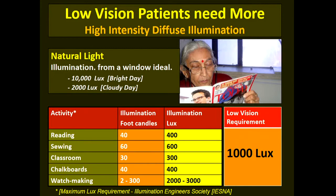For classrooms, one needs about 300 lux of illumination. But a low vision patient, to break through the mistiness of his vision, will require high-intensity diffuse illumination of about 1,000 lux. This can be provided by either natural light or artificial lighting. Sitting near a window provides about 10,000 lux on a bright day and about 2,000 lux on a cloudy day, which is sufficient for a low vision person.